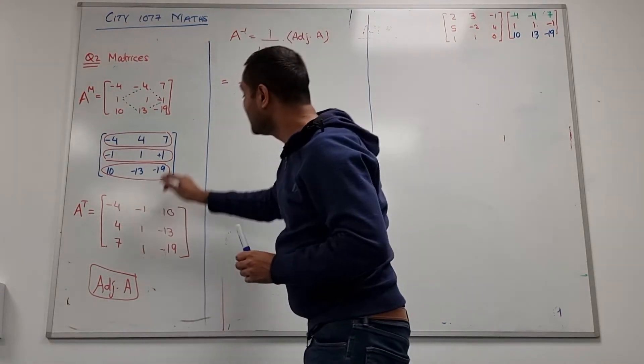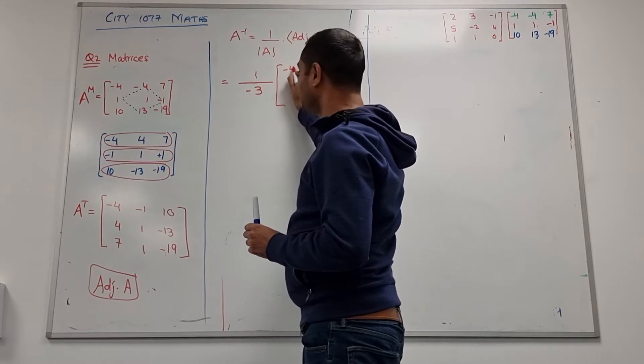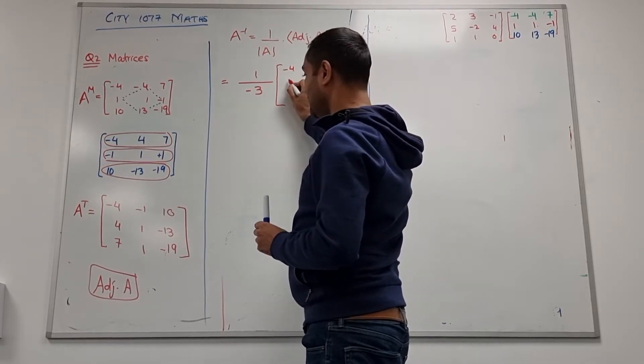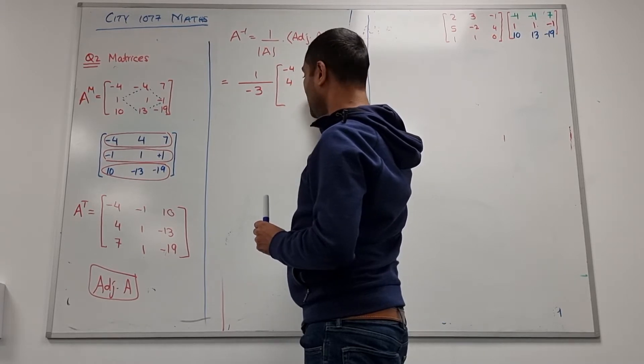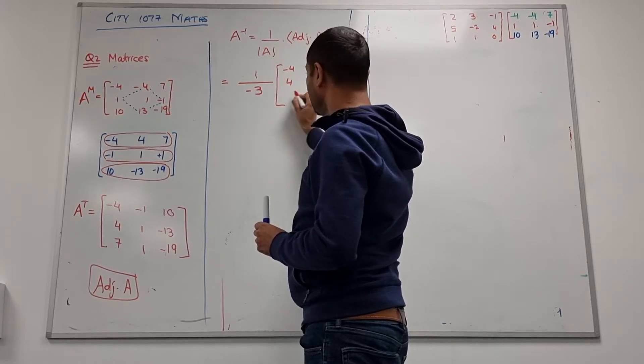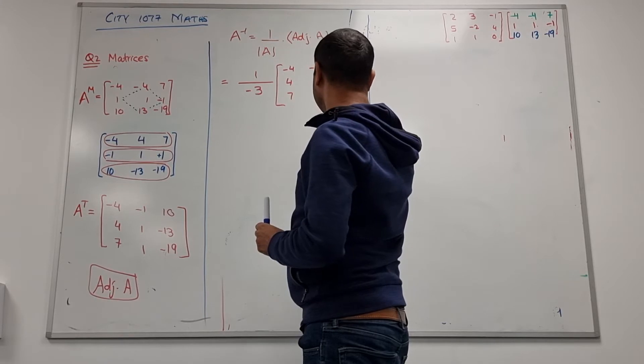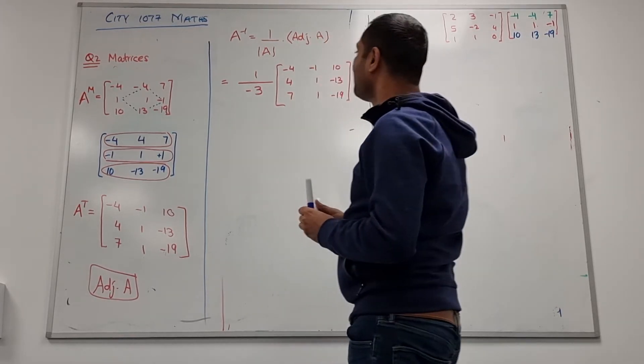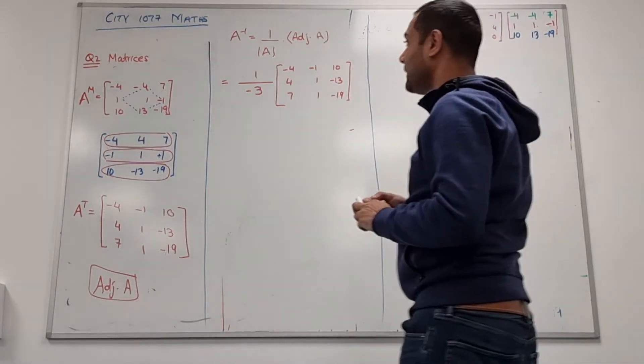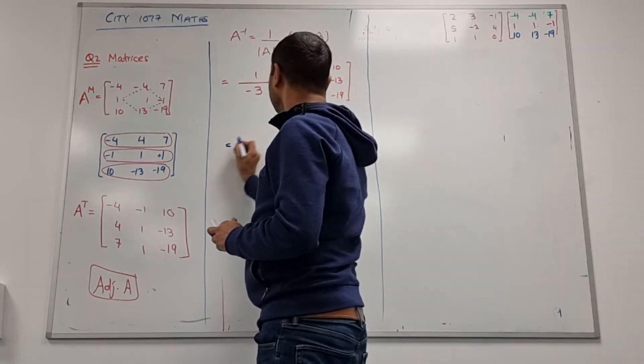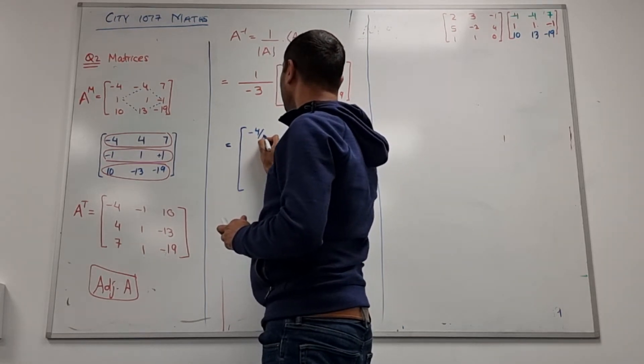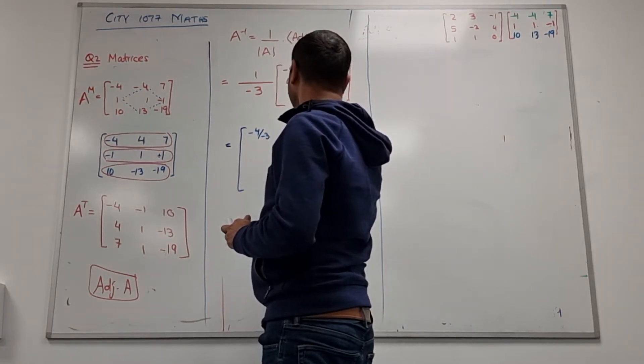And this whole matrix I'm just gonna put here: minus 4, minus 1, 10, 4, 1, minus 13, 7, 1, minus 19. And then I just multiply inside minus 3 or divide everything by minus 3. That will even give me answers in decimal but it's all right.